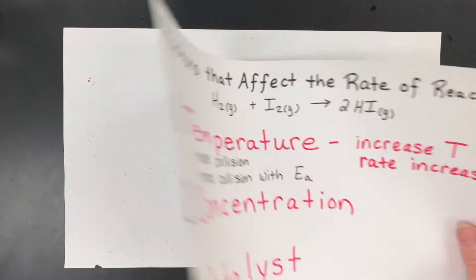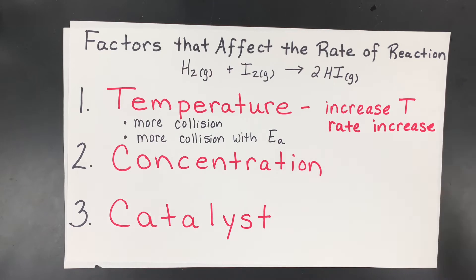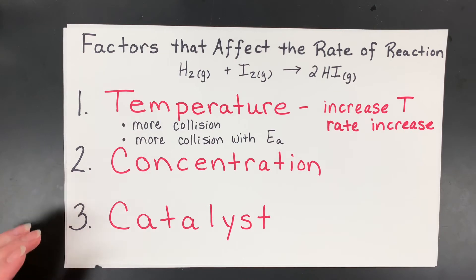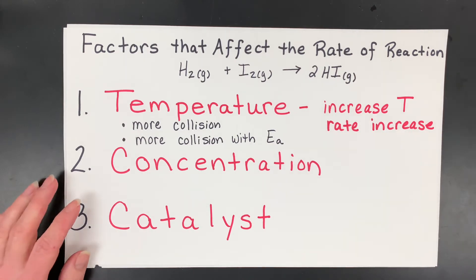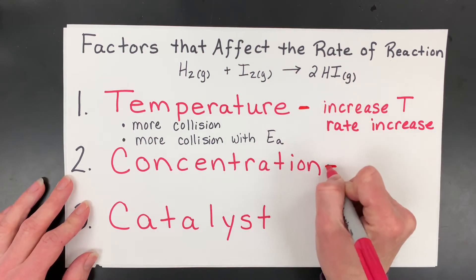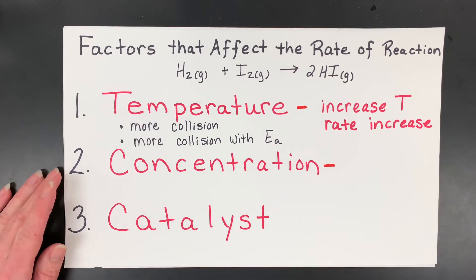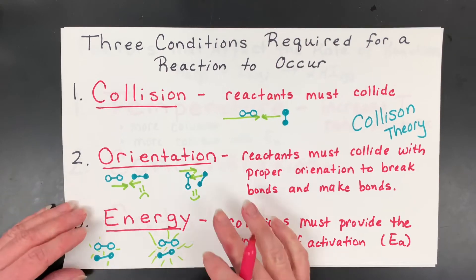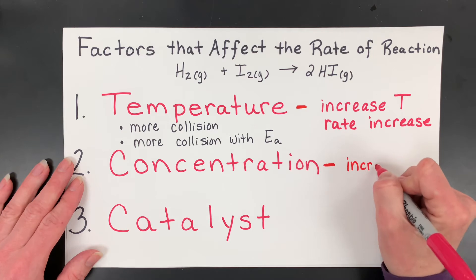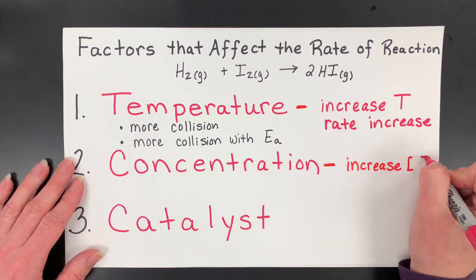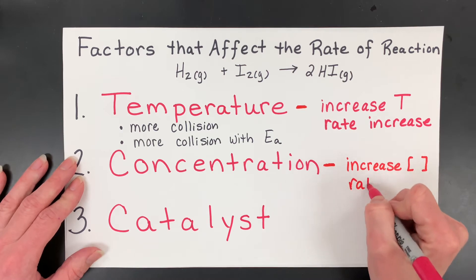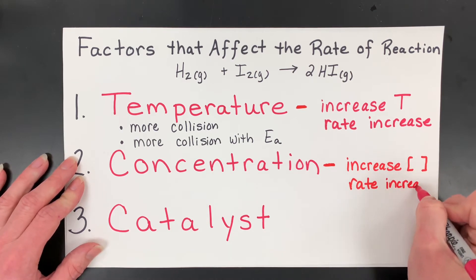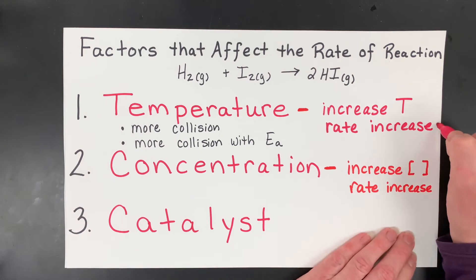So that's the first factor — temperature. It produces more collisions, and more collisions with the activation energy necessary to break the bonds. Next, let's move on to concentration. What about concentration? We again want the reaction to go faster — a faster rate in a shorter period of time. What would you want to do with concentration? You're going to want to increase the concentration. Chemists often use brackets for concentration. Typically, when you increase the concentration, the rate increases. There are some exceptions.